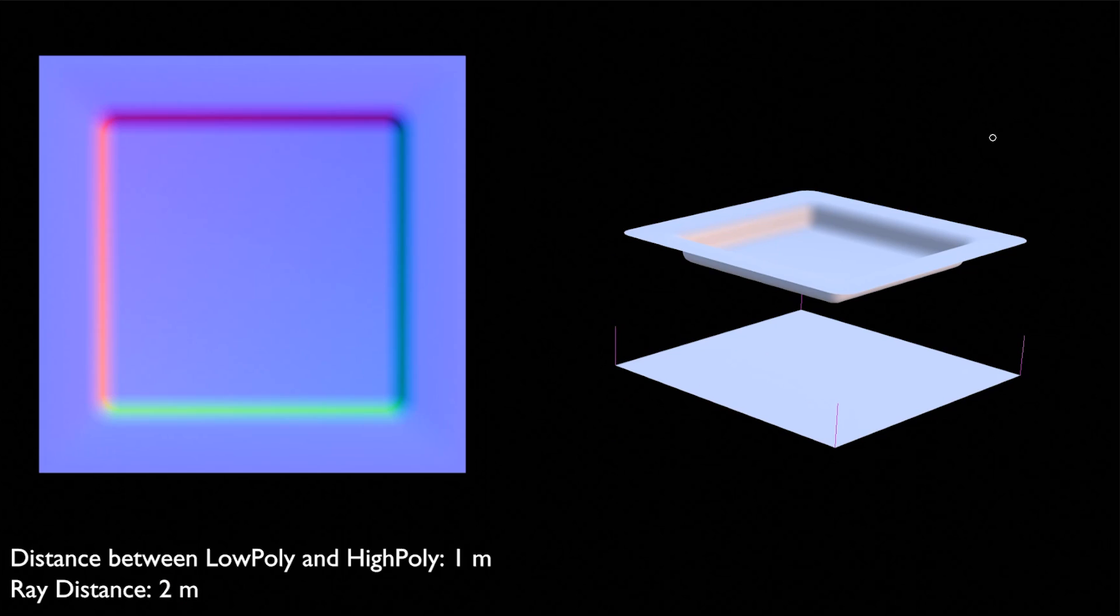Now our ray distance is set to 2 meters. By increasing the ray distance we effectively offset the ray starting point by that distance. The rays still travel inwards but they start 2 meters above the low poly geometry which means at this time they will intersect with the high poly geometry. So really ray distance should only be used if your low poly isn't fully surrounding your high poly. So in this example rays instead of starting from this point will start 2 meters above so about here and go inward which will intersect with our high poly as shown in the texture.